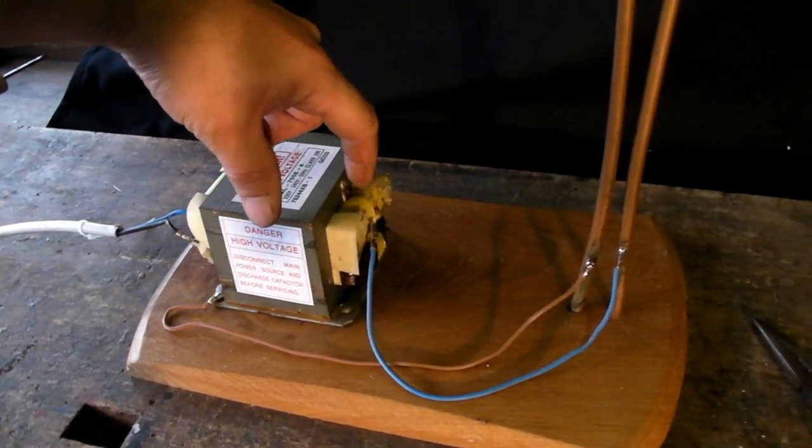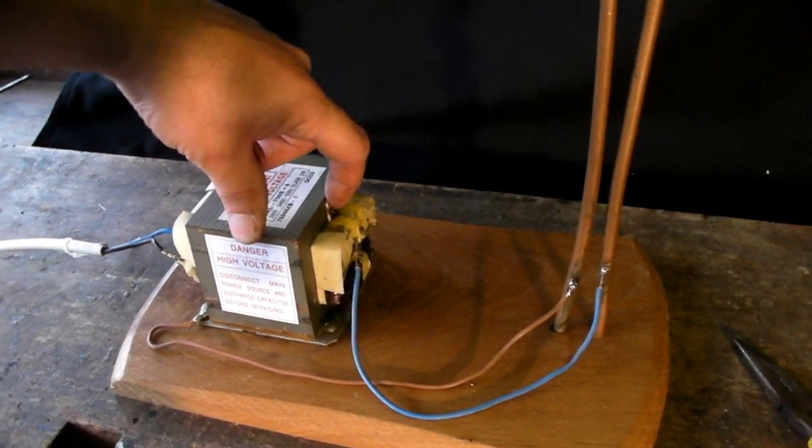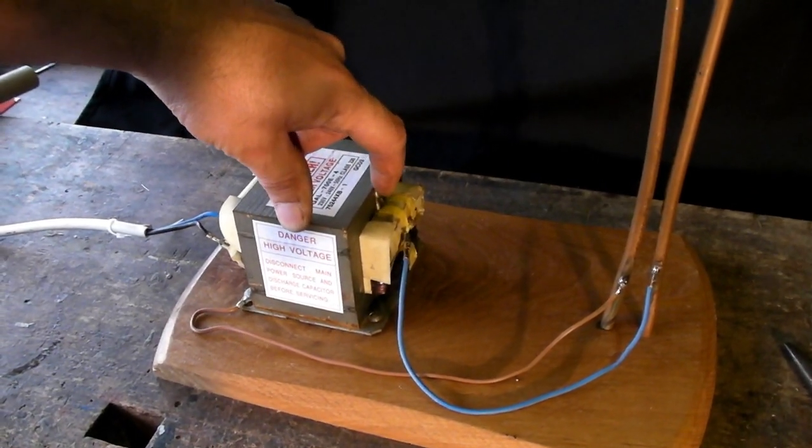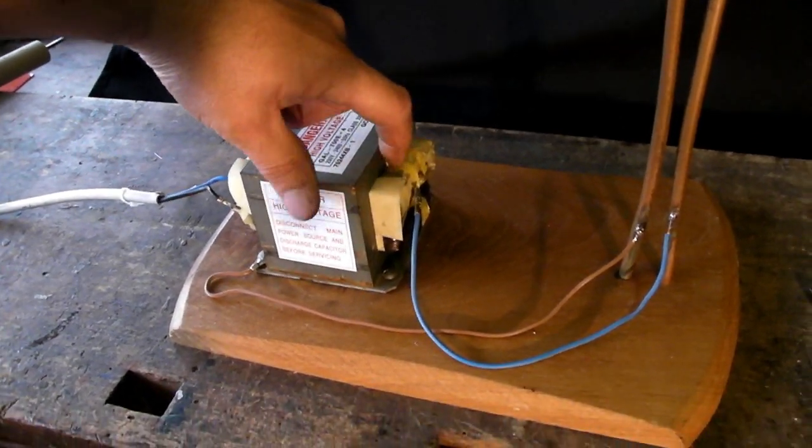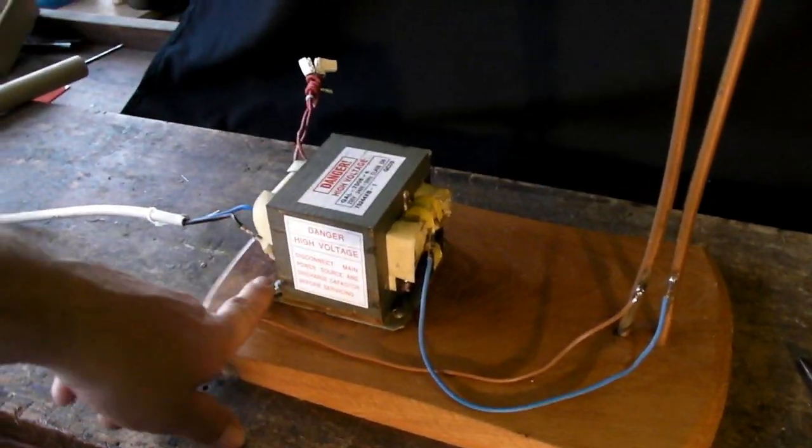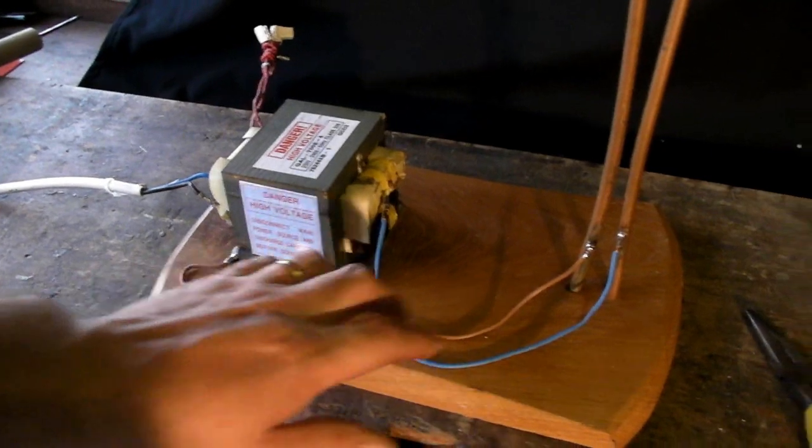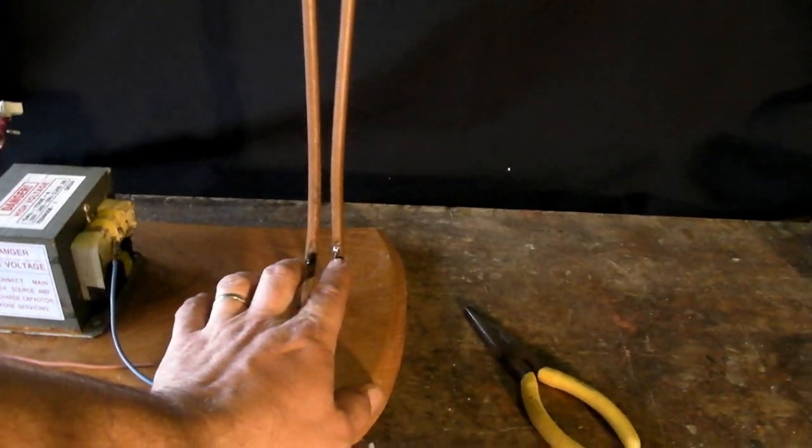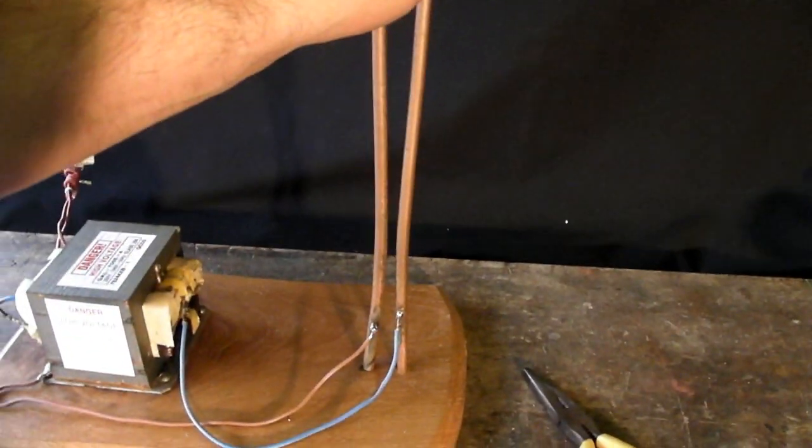Because the other output from the high voltage coil is attached to the frame of the transformer, to the iron core. So we want to connect that to that. So basically there's an electrical contact between those two. So we've got a high voltage supply across the bottom of these two copper pipes.